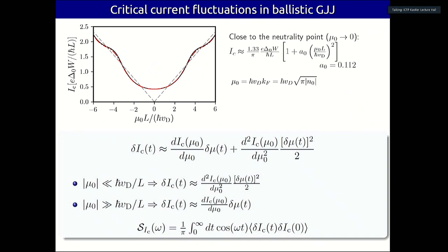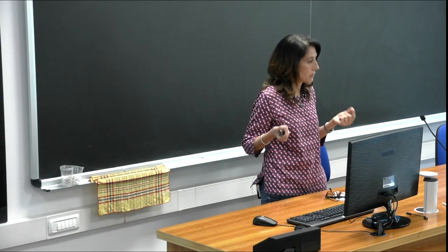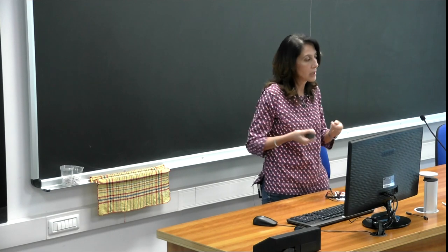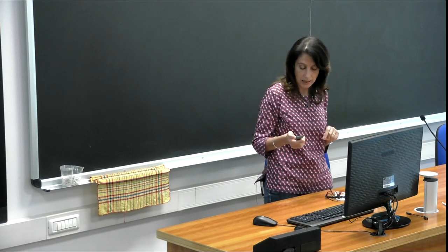We suggest that critical current noise may originate as follows: the critical current of the graphene-Josephson junction depends on the chemical potential with a characteristic shape, so classical fluctuations of the critical current may depend linearly or quadratically on fluctuations of the chemical potential depending on the working point. Due to the two-dimensional structure of graphene, the chemical potential is related to the square root of the carrier density. A mechanism leading to fluctuations of carrier density will therefore produce fluctuations of the chemical potential and hence of the critical current.